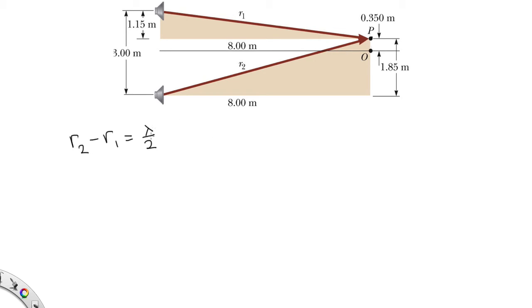So now all we need to do to find lambda is work out what R2 is and what R1 is. OK, we can use Pythagoras' theorem to work these things out. So R2, we've got the height here, 1.85, and the length 8. So it's the square root of 8 squared plus 1.85 squared. Taking the square root of that, we end up with 8.21111 meters.